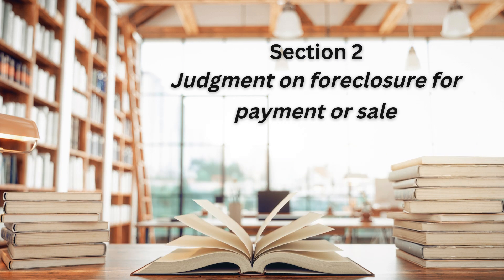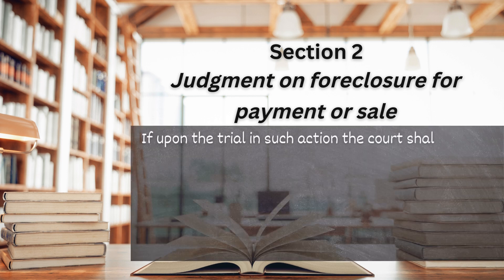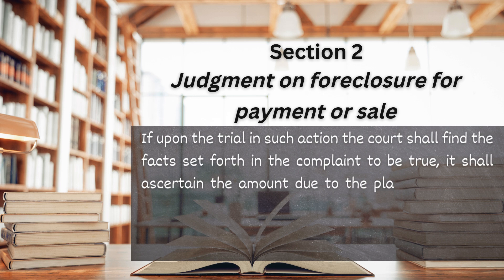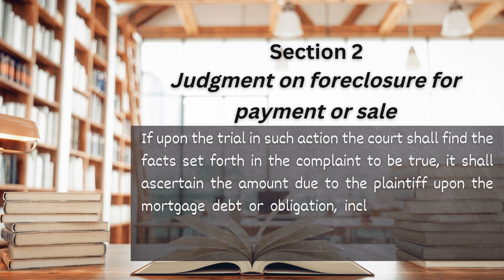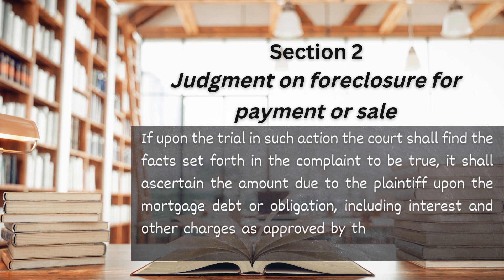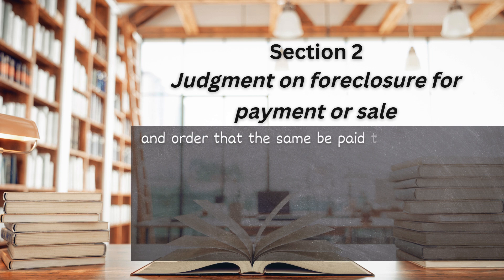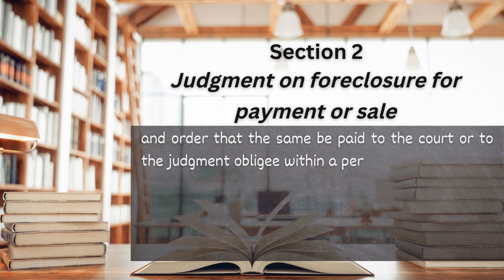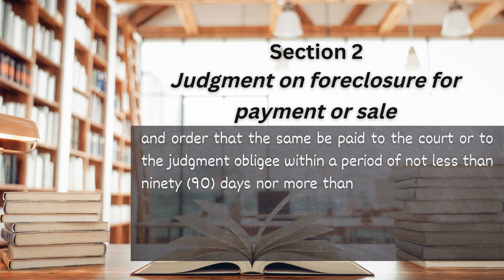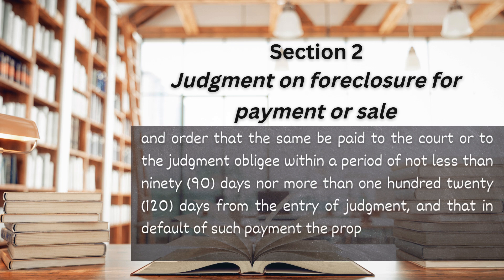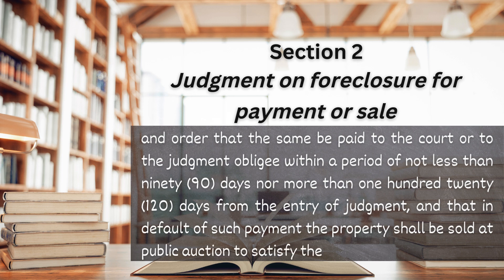Section 2. Judgment on Foreclosure for Payment or Sale. If upon the trial in such action, the court shall find the facts set forth in the complaint to be true, it shall ascertain the amount due to the plaintiff upon the mortgage debt or obligation, including interest and other charges as approved by the court and costs, and shall render judgment for the sum so found due, and order that the same be paid to the court or to the judgment obligee within a period of not less than 90 days nor more than 120 days from the entry of judgment, and that in default of such payment, the property shall be sold at public auction to satisfy the judgment.